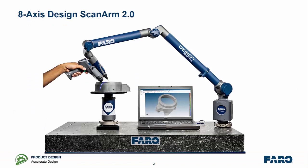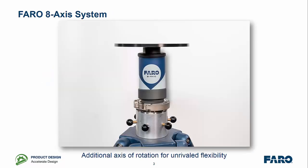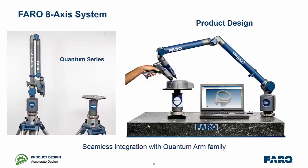The product itself is designed to complement the existing design scan arm and extend the axis range of the unit. The unit is small and portable and can be mounted on a table or on a tripod and adds an additional axis of rotation for unrivalled flexibility. The unit will support our quantum series arms but also our design scan arm series and has seamless integration with all of the family.